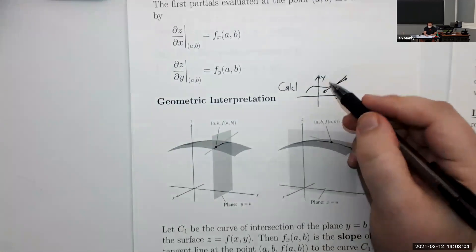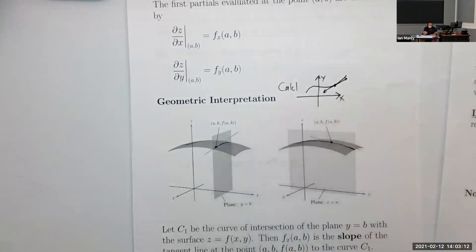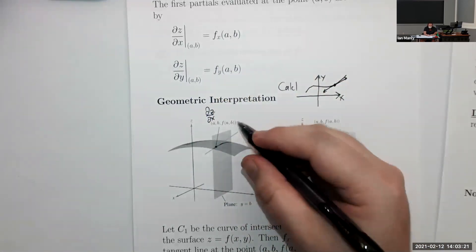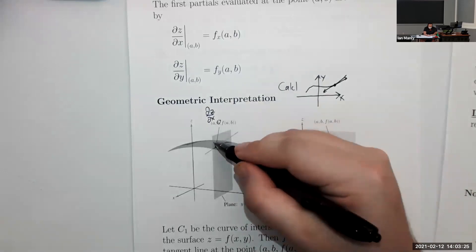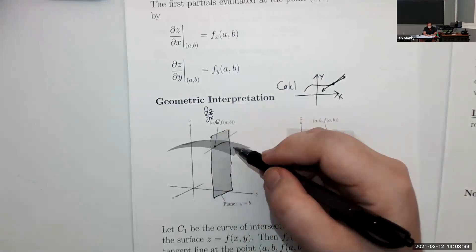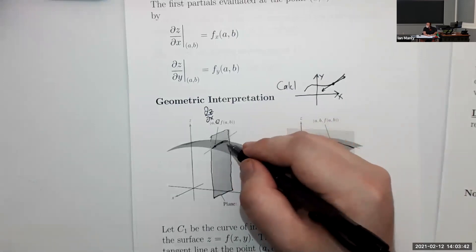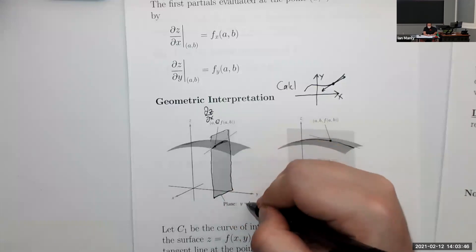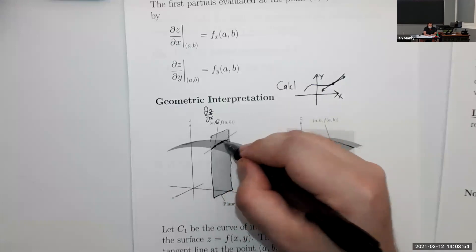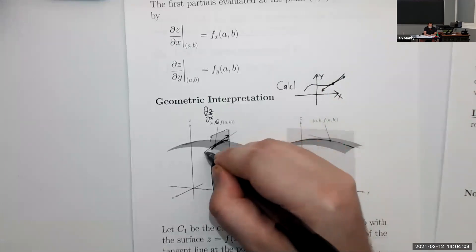What we're going to do is cheat and copy this Calc 1 definition, only use it in a particular place on our surface. If we want to take the partial derivative partial z partial x, we freeze a particular y value, say b, and look at the plane y equals b. This plane will intersect with our surface and make a curve — we're taking a cross-section out of the surface. We then have a 1D curve, so we can use the traditional definition of the derivative. The partial derivative represents the slope of the tangent line to this curve.